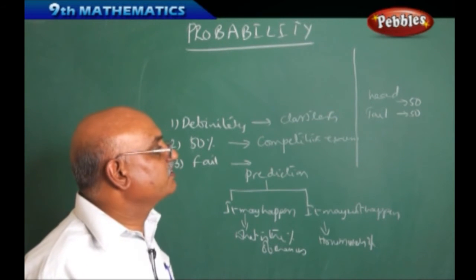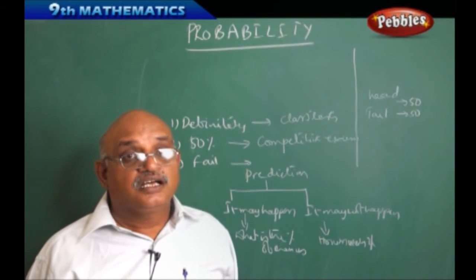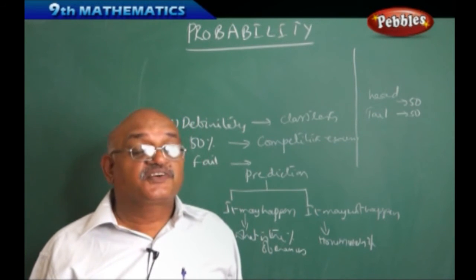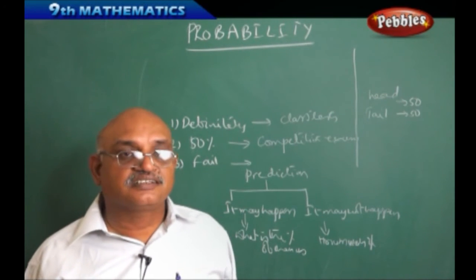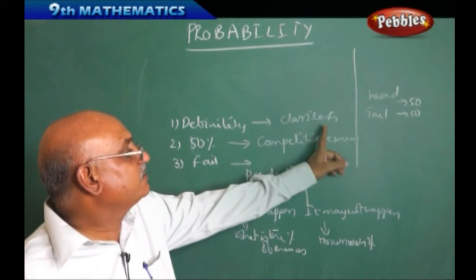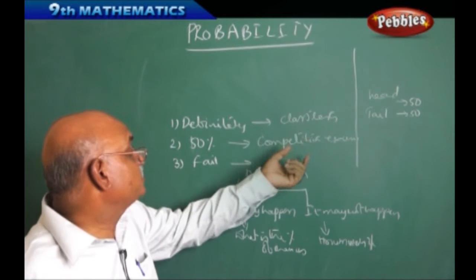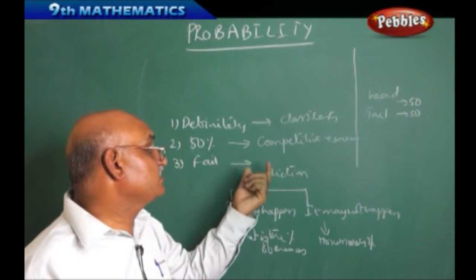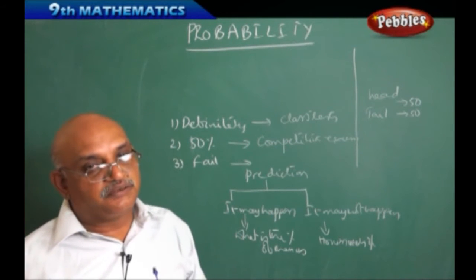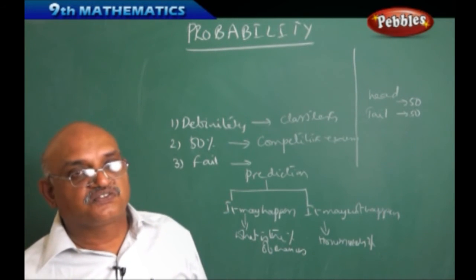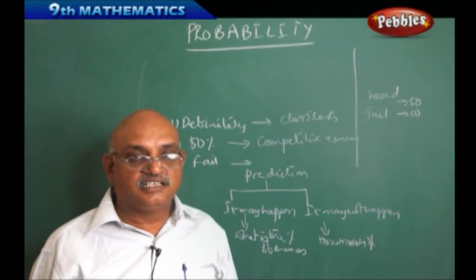Now in our section we are going to study about certain things about probability. But probability always says that out of how many things this may be there, out of how many things this may not be there. Out of how many examinations you got selected, you passed in all the tests. Out of how many competitive examinations you got 50 percent chances. Out of how many tests you failed. Therefore probability always revolves around the word 'out of.' Now we will see certain definitions regarding this.